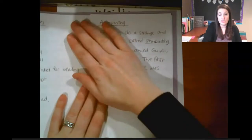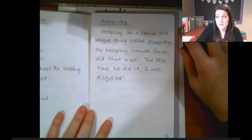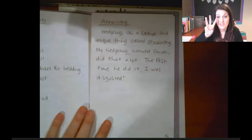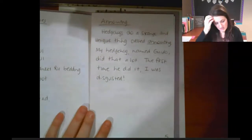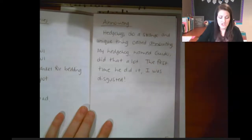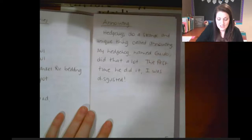It starts on page five and ends on page seven — so that's three pages. The chapter is called 'Anointing.' Hedgehogs do a strange and unique thing called anointing. My hedgehog named Guido did that a lot. The first time he did it, I was disgusted.